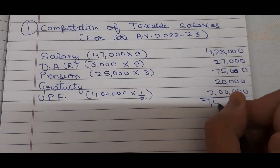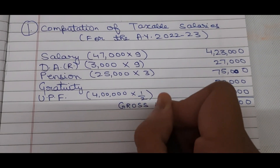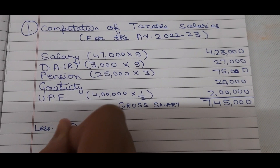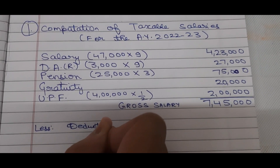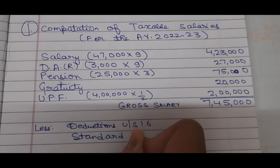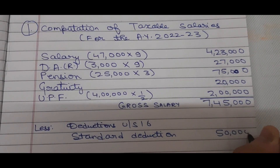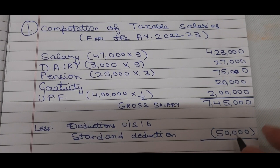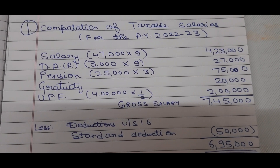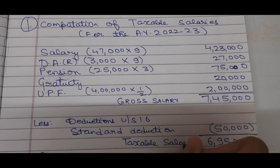Adding all components together gives gross salary of 7,00,000 rupees. Then we deduct under Section 16: standard deduction, which is fixed at 50,000 rupees. After subtracting, taxable salary comes to 6,95,000 rupees. That is the taxable salary. Thank you.